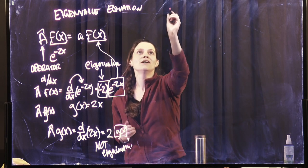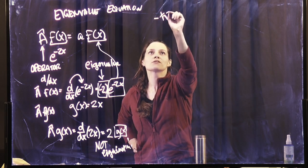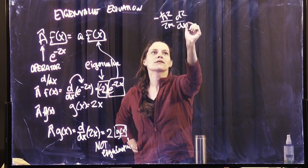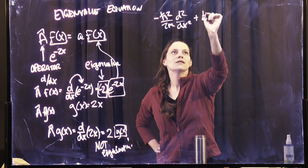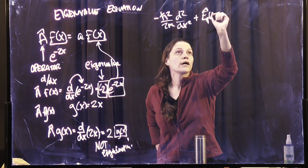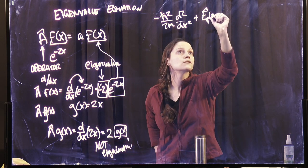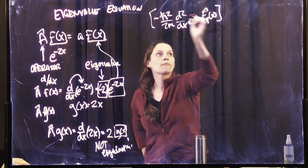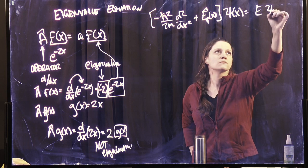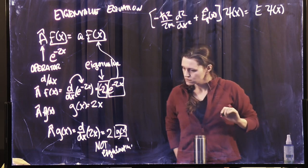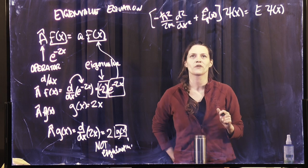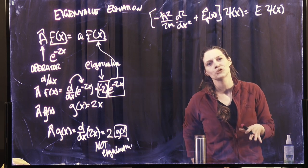The Schrödinger equation is: minus h-bar squared over 2m, d-squared dx-squared, plus the potential energy operator of x. There's the Schrödinger equation. This is the time-independent Schrödinger equation.